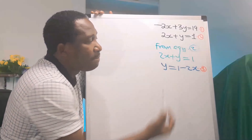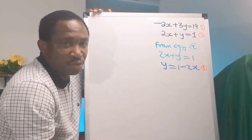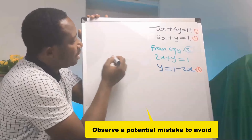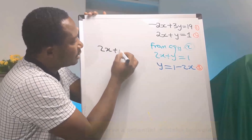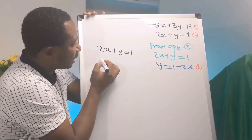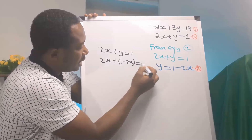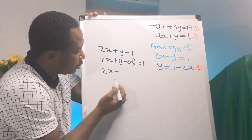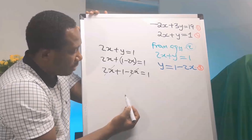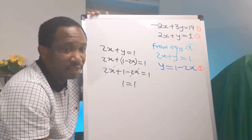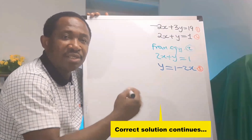Don't make the mistake of substituting equation 3 back into where we got it from — we extracted equation 3 from equation 2. Let me demonstrate this mistake: substituting equation 3 back into equation 2, which has 2x plus y equals 1. Replacing y with 1 minus 2x gives 2x plus 1 minus 2x equals 1. The 2x and minus 2x cancel, and we get 1 equals 1 — both x and y have been eliminated. Now let's do it correctly.